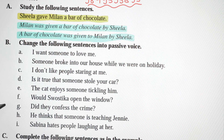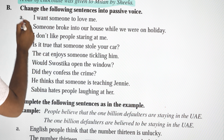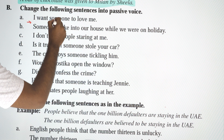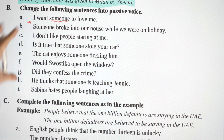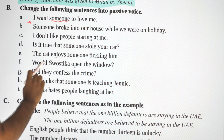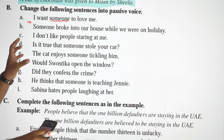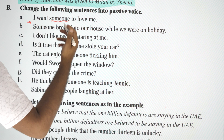Sentence: 'I want someone to love me.' Here 'someone' is insignificant — we don't know who someone is, so we omit the agent. Passive: 'I want to be loved.'